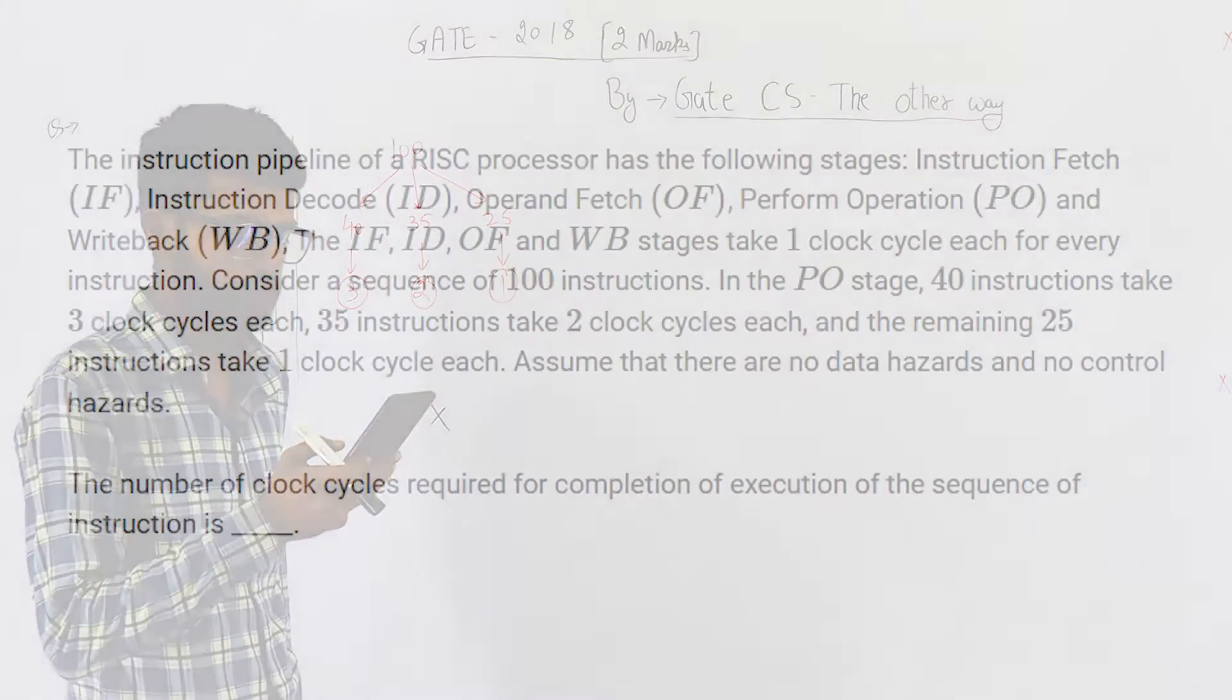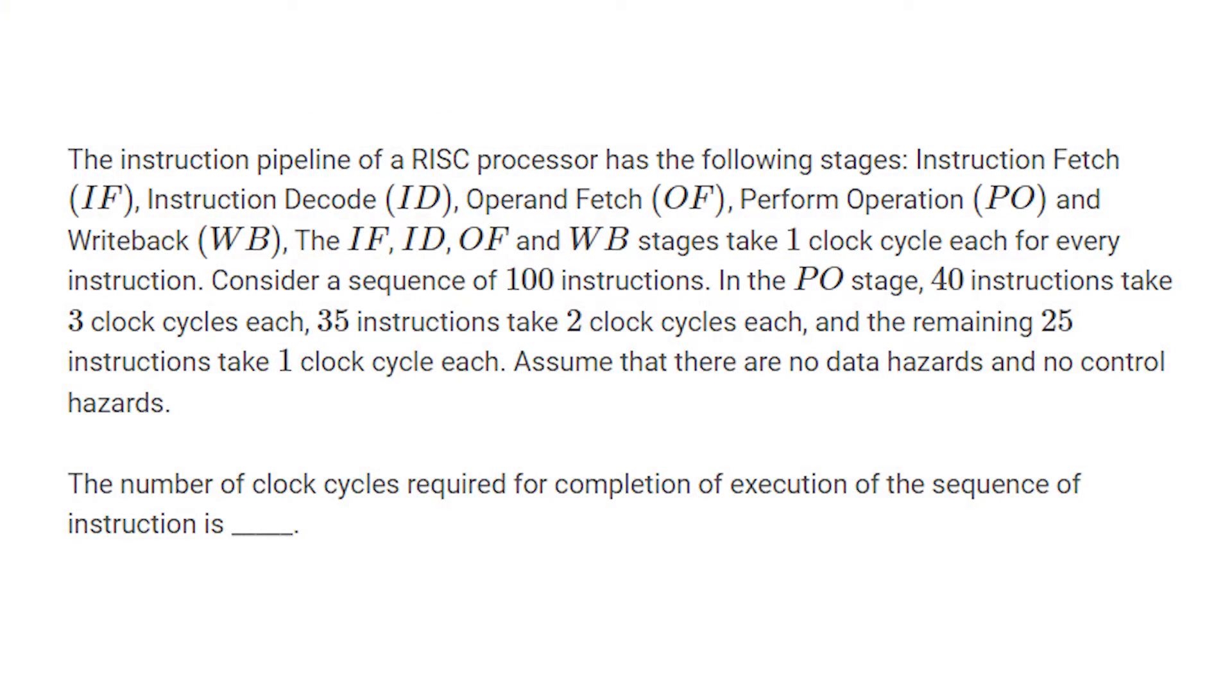The instruction pipeline of a RISC processor has the following stages: instruction fetch, instruction decode, operand fetch, perform operation, and write back. The IF, ID, OF, and WB stages take one clock cycle each for every instruction.